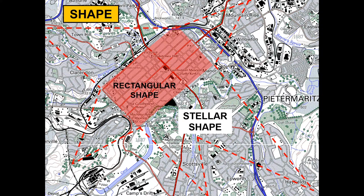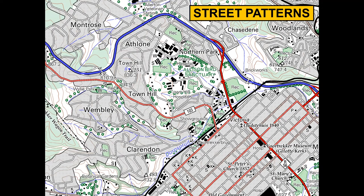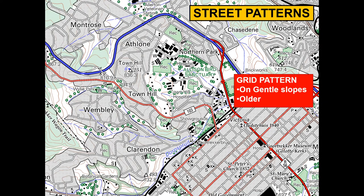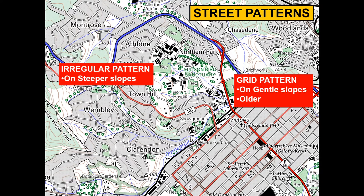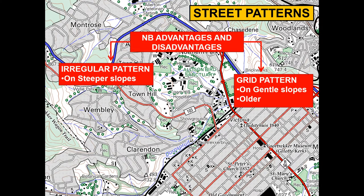With the street patterns, let's have a look. Here we have our grid pattern, which will be found on gentle slopes as well as in older areas. Our irregular pattern will be on steeper slopes. Both of these have advantages and disadvantages. Questions will be: why will traffic congestion be more in an area with a grid pattern in comparison to an irregular pattern?